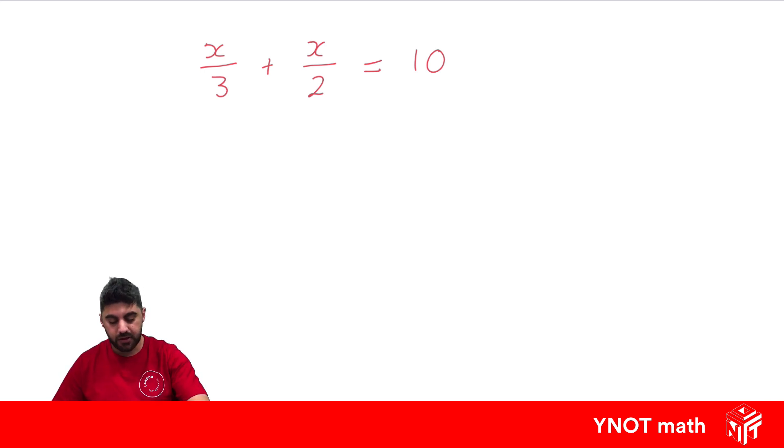So we need the lowest common multiple of 2 and 3. All right, so let's write some multiples of 2. We've got 2, 4, 6, 8, 10, and so on. We've got 3, 6, 9, 12, and so on. And hopefully you can see that the lowest number in both is 6 and that's our lowest common multiple.